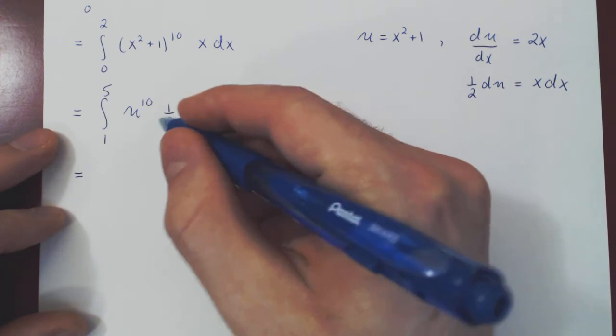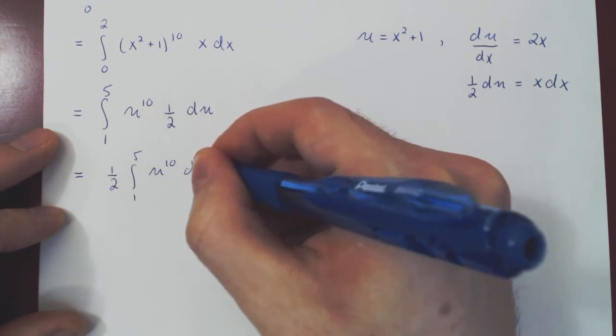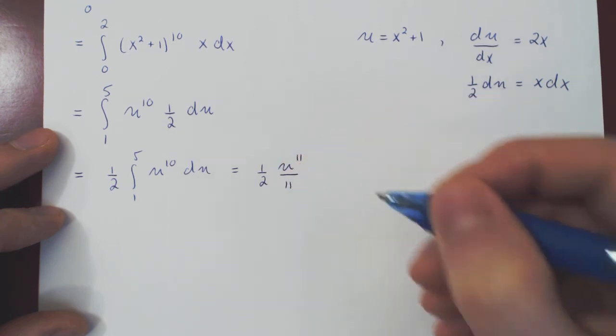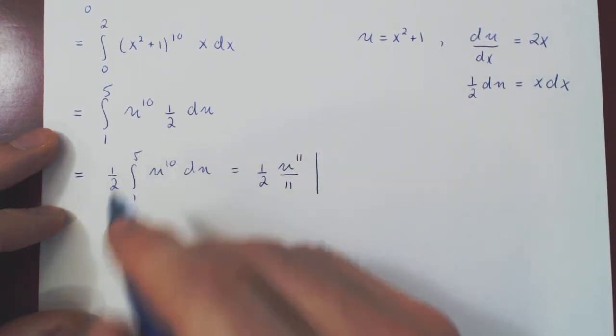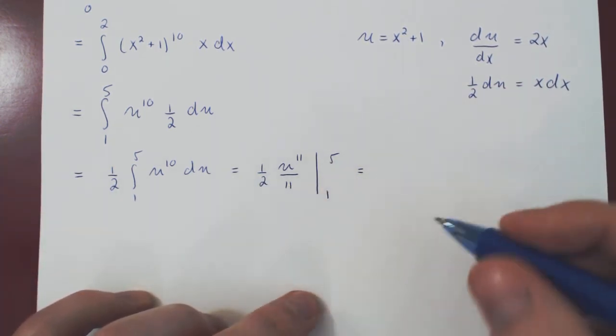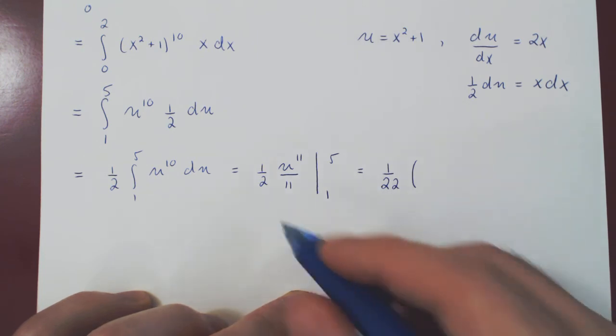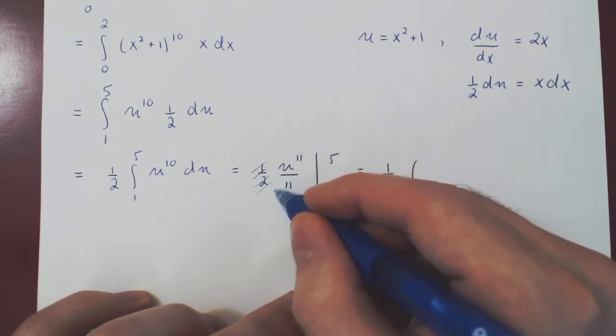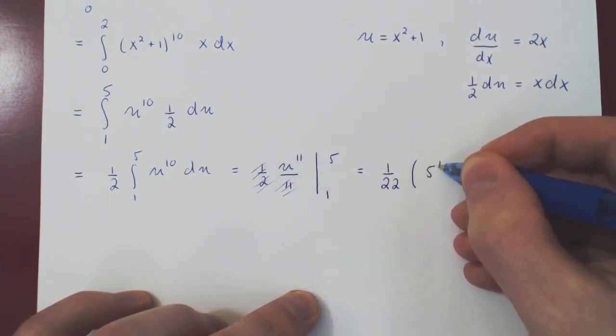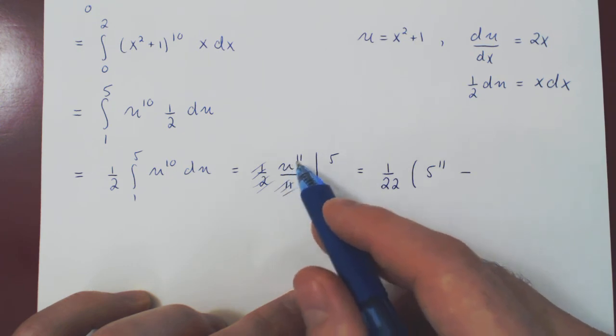So as we've done before, we'll factor the 1 half outside. Integral from 1 to 5, u to the 10 du. This is trivial, we use the power rule. So 1 half, u to the 11 over 11. And we must evaluate as u goes from 1 to 5. We have a 1 over 22 that we can leave out. And then if we leave the 1 over 22 out, then we must evaluate u to the 11 when u is 5, that's 5 to the 11, minus the function at the lower bound, u to the 11 when u is 1, 1 to the 11.